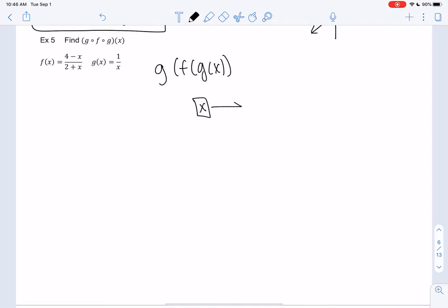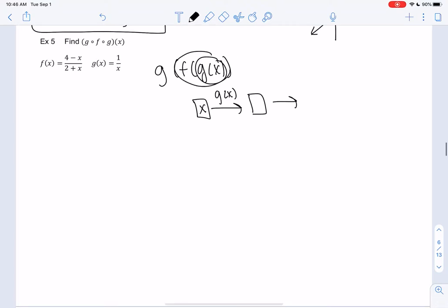So essentially, we're starting with x, we're going to use the g function and get some output. We're going to take that and we're going to use the f function. And then we're going to do one more time and output in g again. So it's basically just a multi-level function or machine, we're going through multiple machines. So we're just going to start from the inside and work our way out.